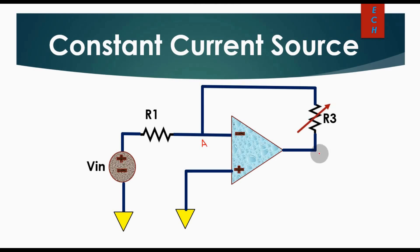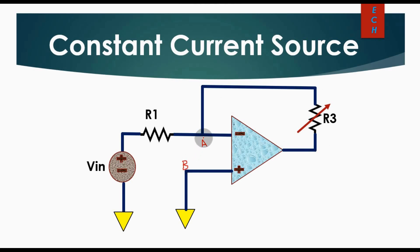Since this operational amplifier is connected in a closed-loop configuration and also in negative feedback, due to virtual ground, the voltage at this node — let us call this node B — the voltage at node B is equal to the voltage at the non-inverting terminal.